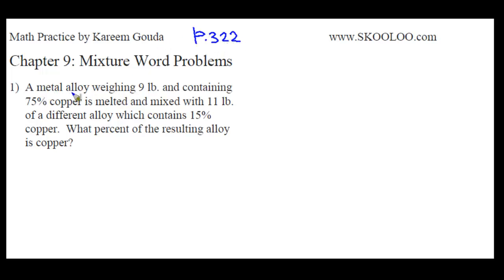Here it says that a metal alloy weighing 9 pounds and containing 75% copper is melted and mixed with 11 pounds of a different alloy which contains 15% copper. So we have two different alloys or two different metals. One of them is 9 pounds and 75% of it is copper. The other is 11 pounds with 15% copper. Now the question asks what percent of the resulting alloy when I add this one and that one together is copper?